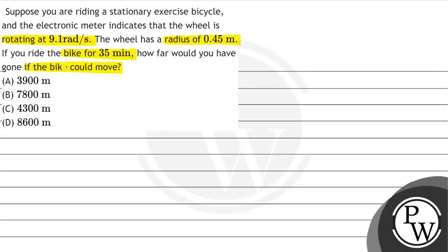Okay, so the question is asking: we have a bicycle, this man is riding it, the wheel's rotating angular speed is given, and its radius is given. So if we ride the bike for 35 minutes, how far would the bike have traveled?